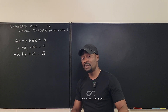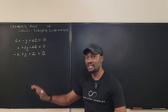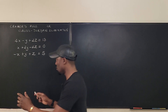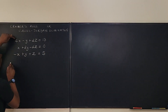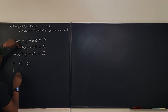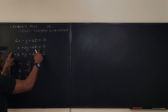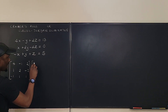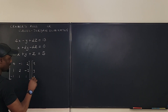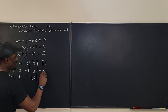In solving the system of equations using Cramer's rule, you want to quickly rewrite your system as a product of matrices. Take the skeleton out of this: it's going to be 4, -1, and 2; then 1, 2, -2; and -1, 1, 1. So I have a matrix. This matrix multiplies the column X, Y, Z and the result on the right-hand side is the column 13, 0, and 5.